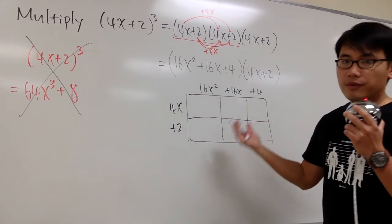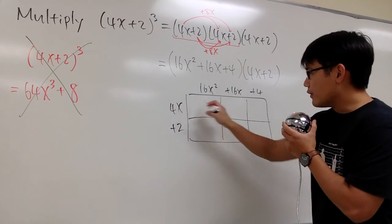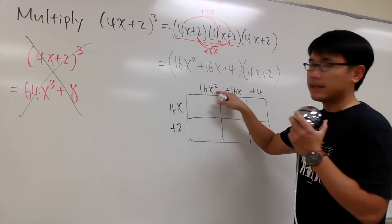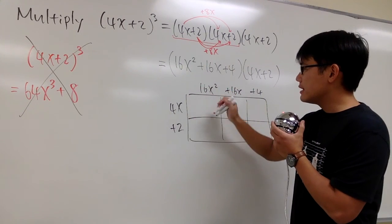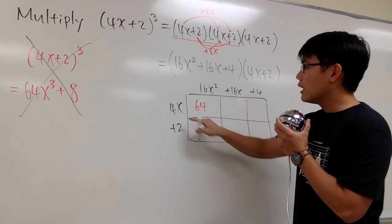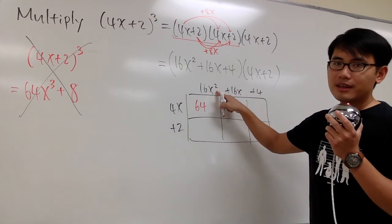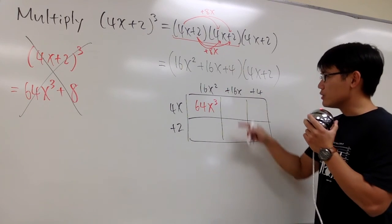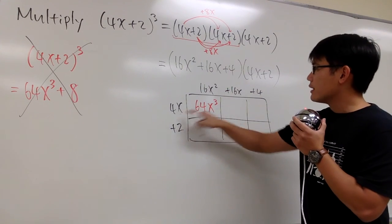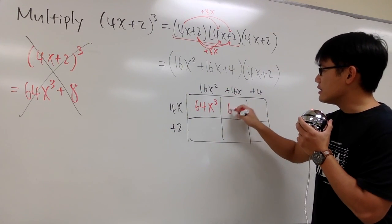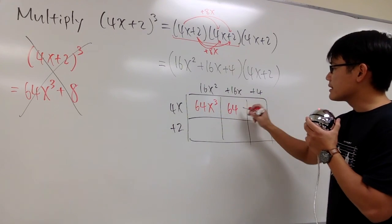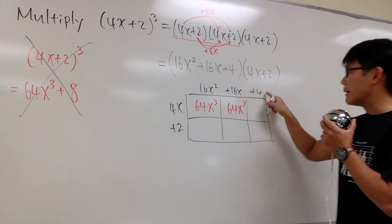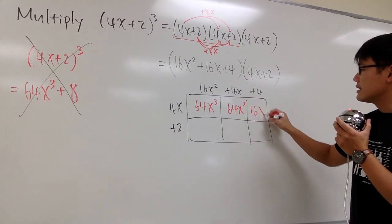And then we'll begin to fill in the boxes. To fill in this box, what we do is we take 4x times 16x squared, 4 times 16, that will give us 64, x times x squared, that will give us x to the 3rd power. And then we continue, 4 times 16, that will once again give us 64, x times x, that's x squared, and then we have 4x times 4, that will give us 16x.